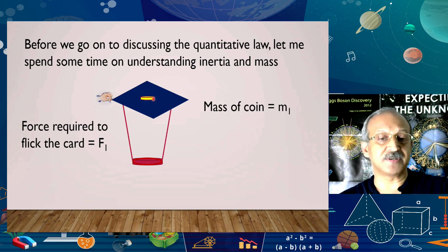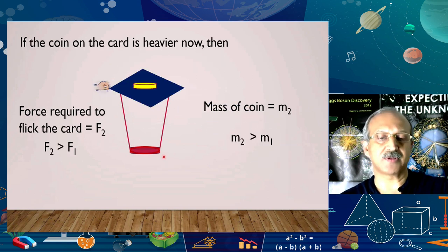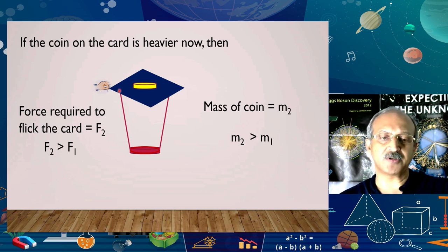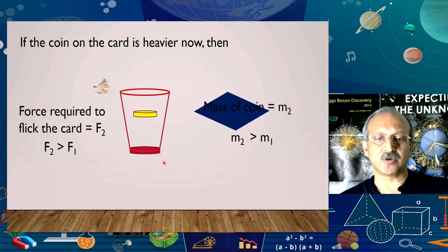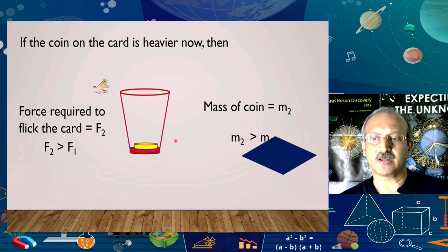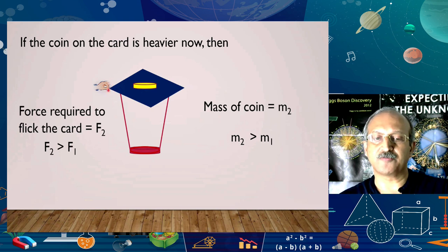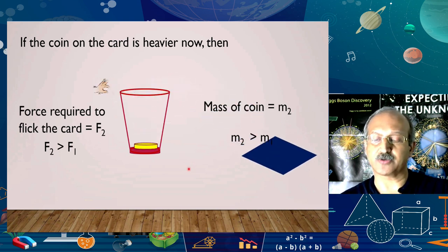Now I'm going to repeat this experiment with a different coin — a much heavier coin. If we do it with a heavier coin, obviously the force required to flick the card would be much higher. Everything else remains the same — the card will flick off and the coin will again fall into the tumbler. But what we are experiencing here is that if the mass of the coin on the card is larger, then the force required to flick the card off is also greater. So F2 is greater than F1 because mass M2 is greater than M1.